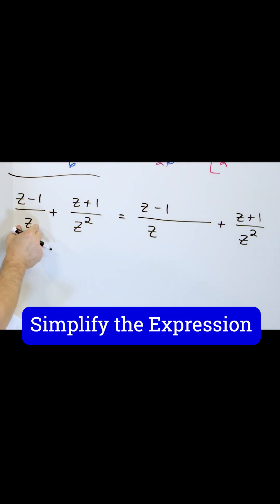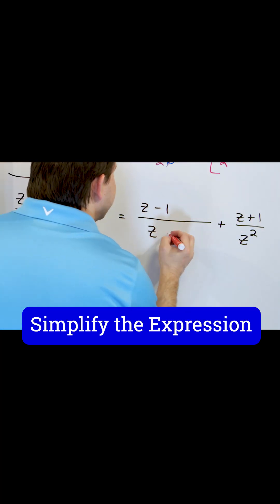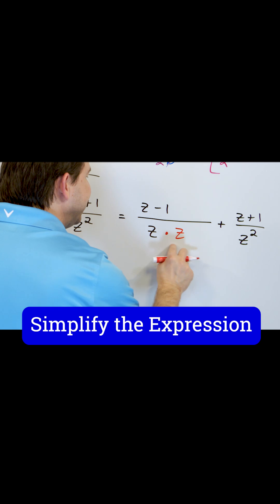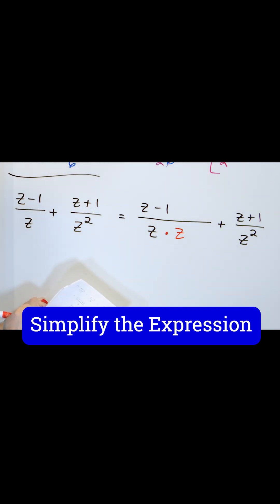Now in this case I know that if I multiply this by z on the bottom, then what will I get for a new denominator? I'll have z squared, then I'll match the denominator as I have it over here.